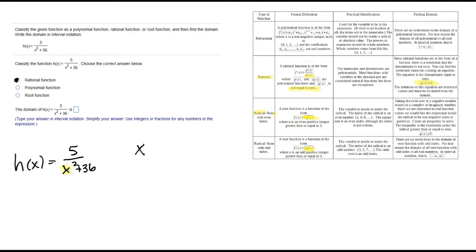So our denominator is x squared plus 36. We're going to set that equal to zero and solve. I subtract 36 on both sides. That gives me x squared equals negative 36.